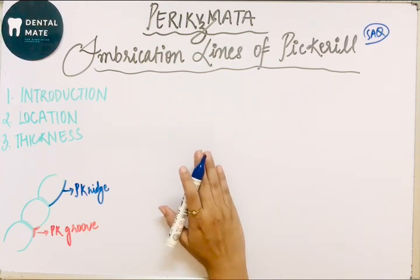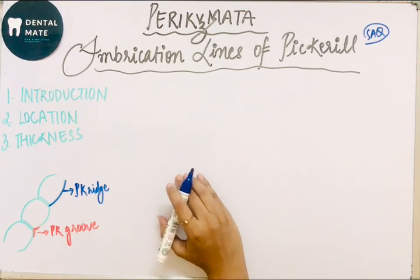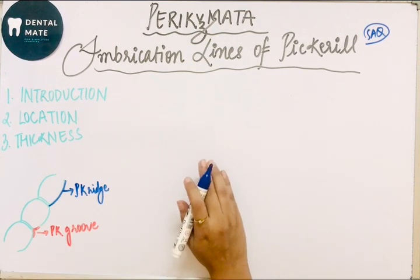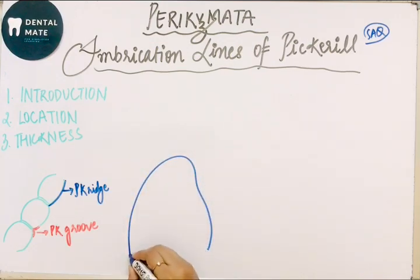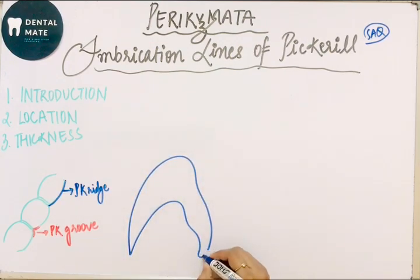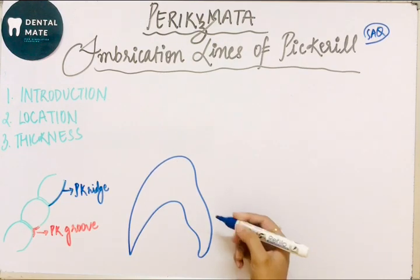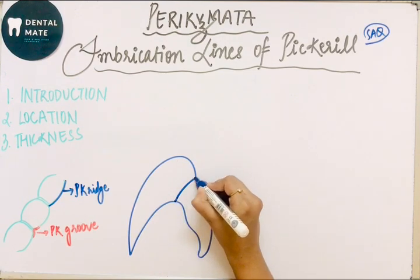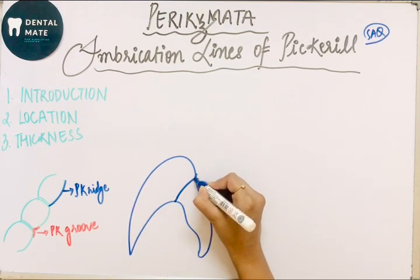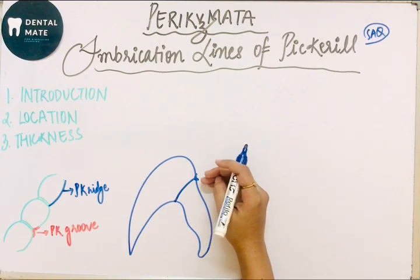Perichymeta are the external surface manifestations of the incremental lines as shallow furrows. When we look at the tooth, the incremental lines — that is, the incremental lines of Retzius or the striae of Retzius — run from the dentino-enamel junction to the surface, forming shallow furrows. That is known as the perichymeta.